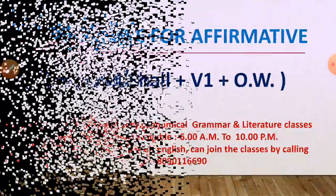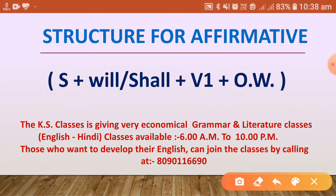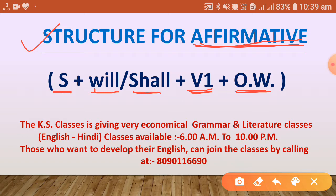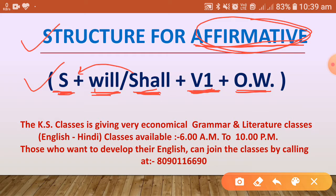Now let us see the structures for affirmative sentences. The structure is: Subject + Helping Verb (will/shall) + Main Verb (first form) + Other Words. First we write the subject, then the helping verb will or shall according to the subject, then the first form of the verb, then other words including the object.